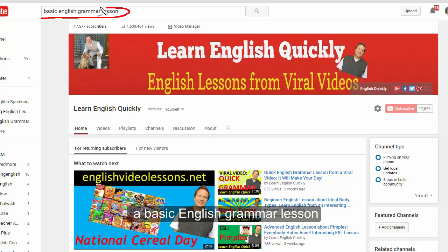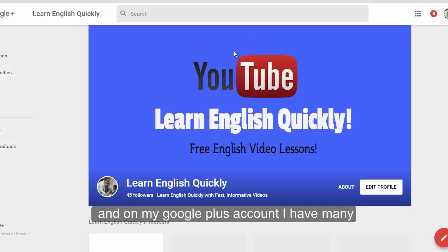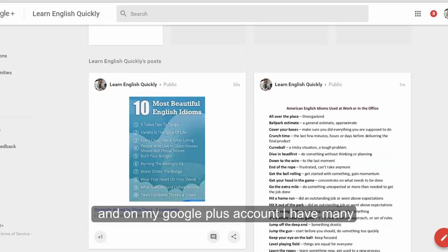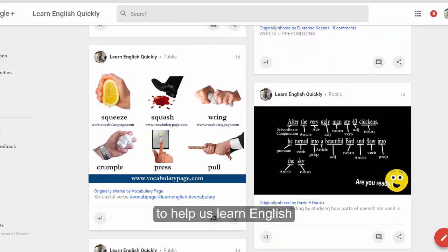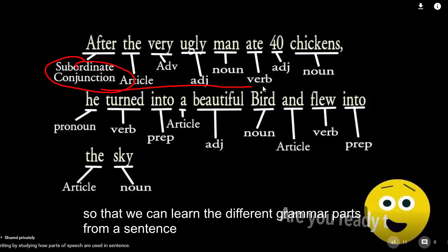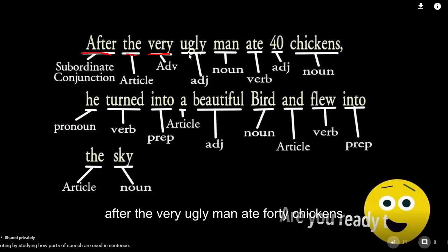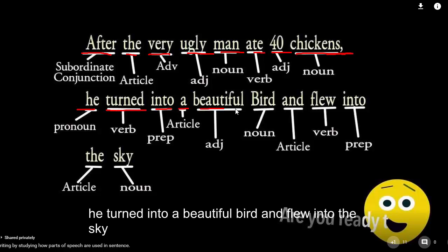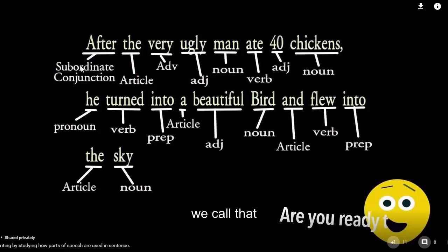Hi, it's David Claussen with Learn English Quickly. On my Google Plus account I have many different visuals to help us learn English. I found one here so that we can learn the different grammar parts from a sentence. The sentence reads: 'After the very ugly man ate 40 chickens, he turned into a beautiful bird and flew into the sky.' So let's take a look at these — we call these the parts of speech.